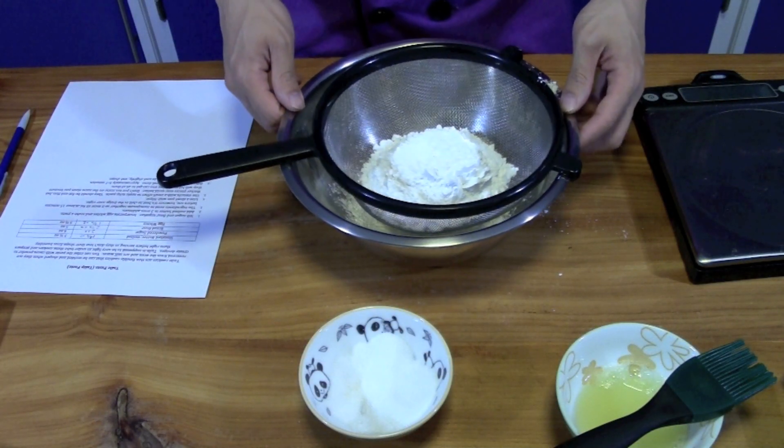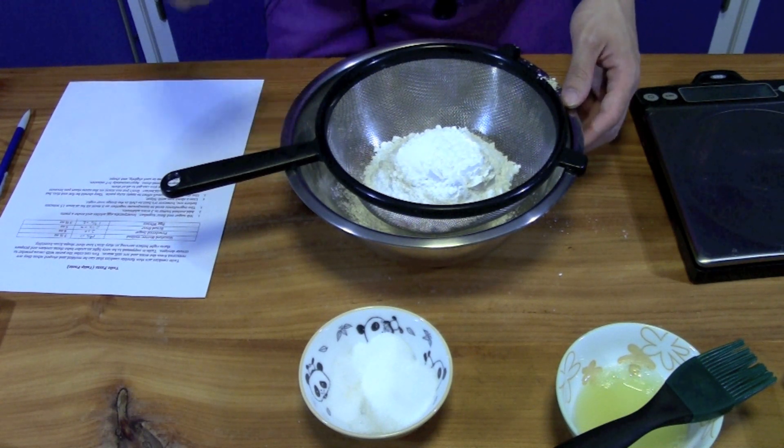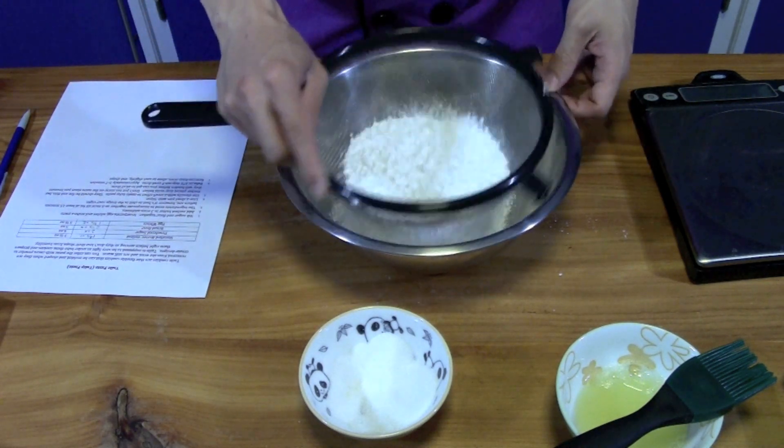To make the tuile paste, we're going to combine three ounces of powdered sugar with two and a half ounces of bread flour. That bread flour makes it extra moldable and pliable with all that extra protein, and we're going to sift that together.